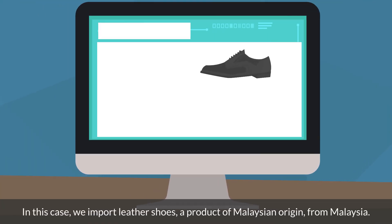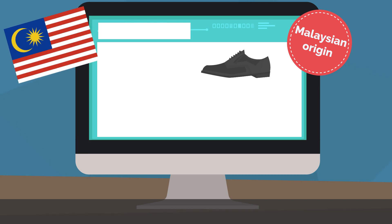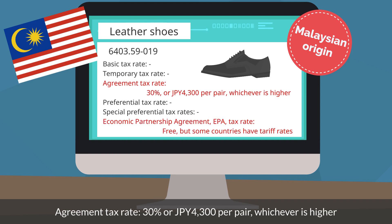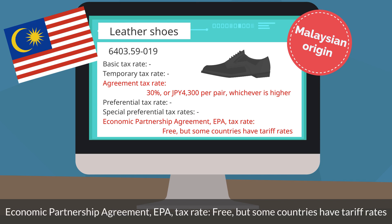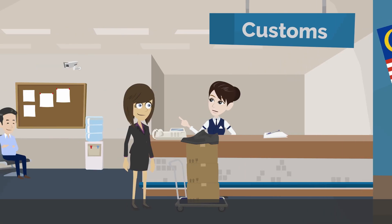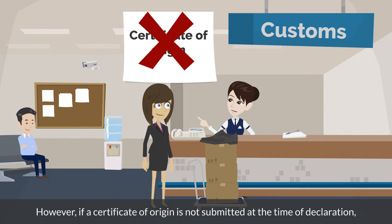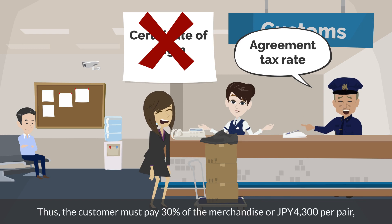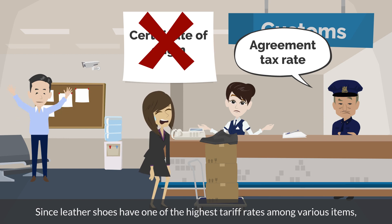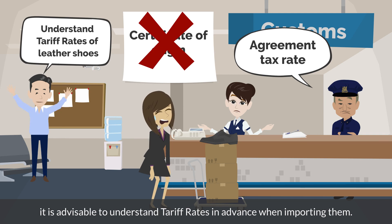In this case, we import leather shoes, a product of Malaysian origin, from Malaysia. The tariff rate for leather shoes with HS code 640359019 is as follows: Agreement tax rate 30% or 4,300 Japanese yen per pair, whichever is higher. EPA tax rate is free, but some countries have tariff rates. When importing from Malaysia, the EPA tax rate is applied and there is free. However, if a certificate of origin is not submitted at the time of declaration, the agreement tax rate will apply, and the customer must pay 30% of the merchandise or 4,300 Japanese yen per pair, whichever is higher. Since leather shoes have one of the highest tariff rates among various items, it is advisable to understand tariff rates in advance when importing them.